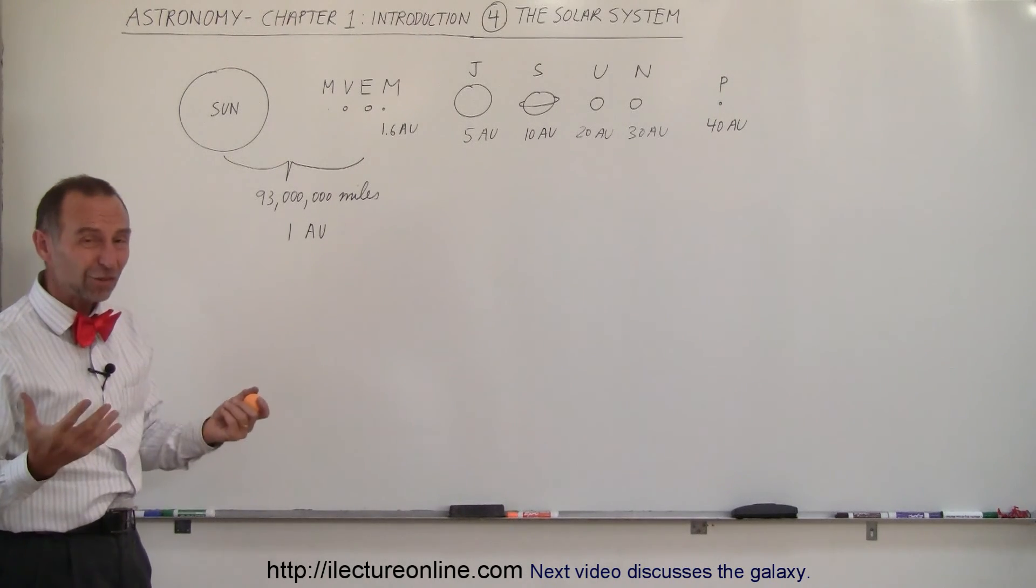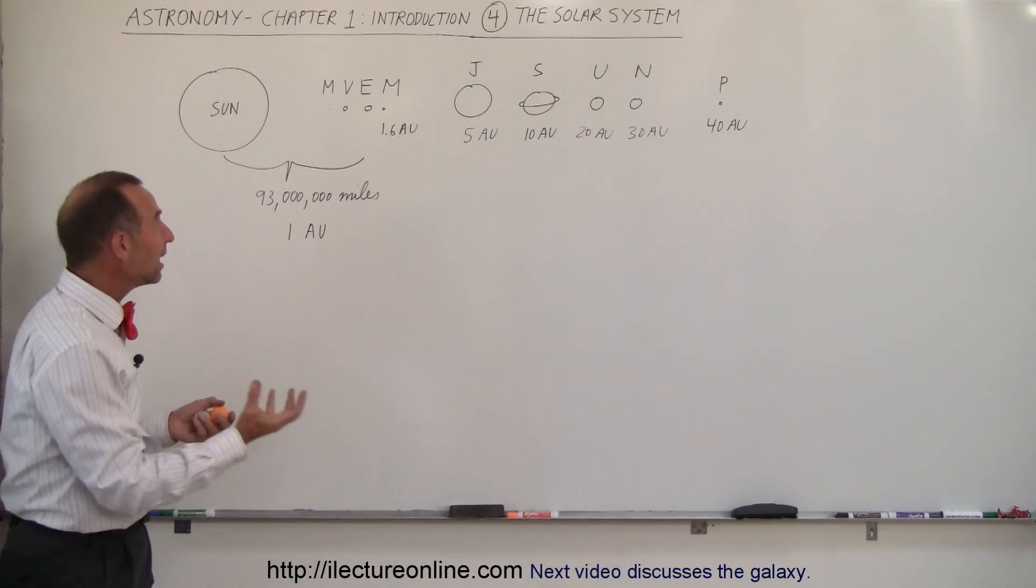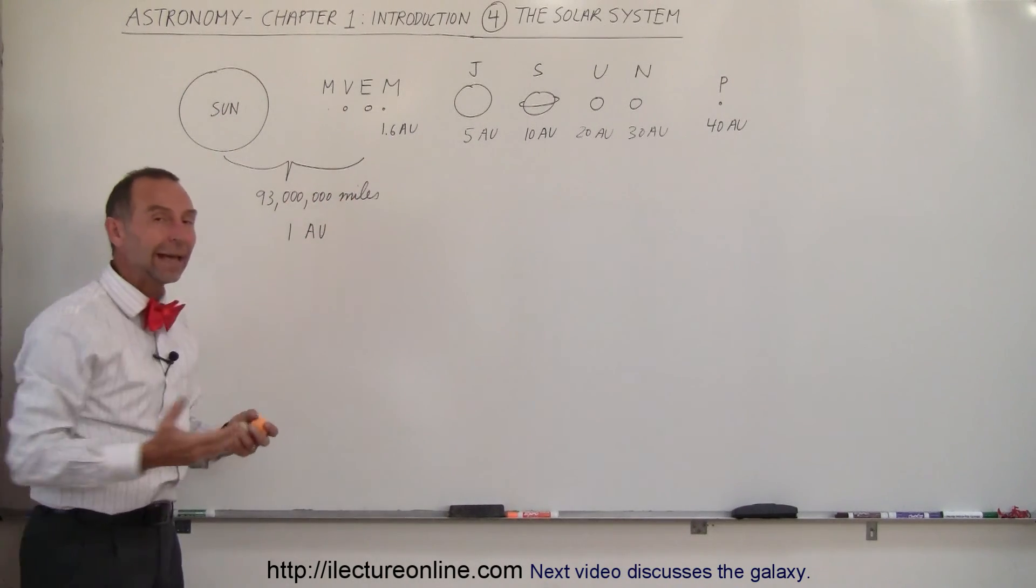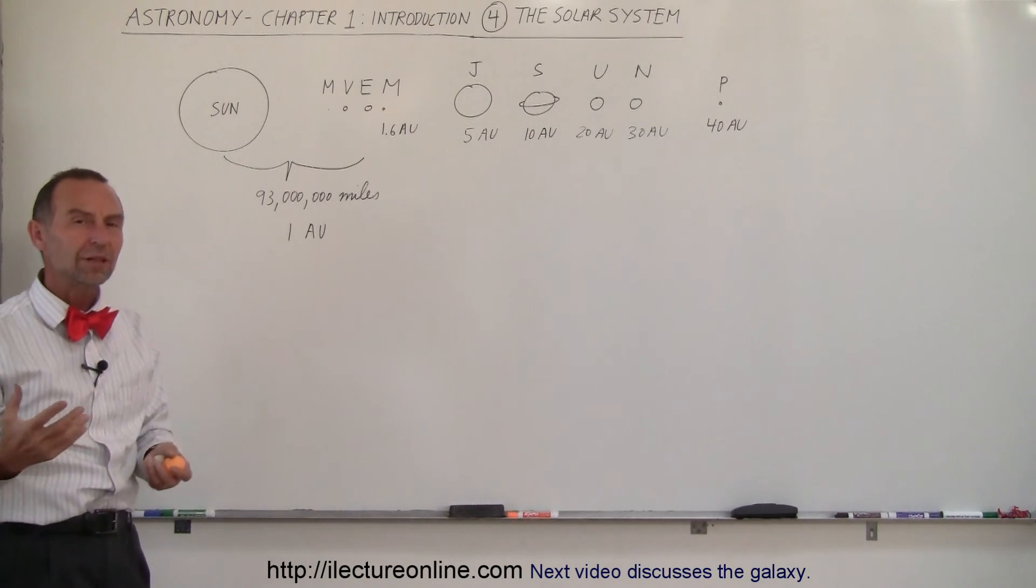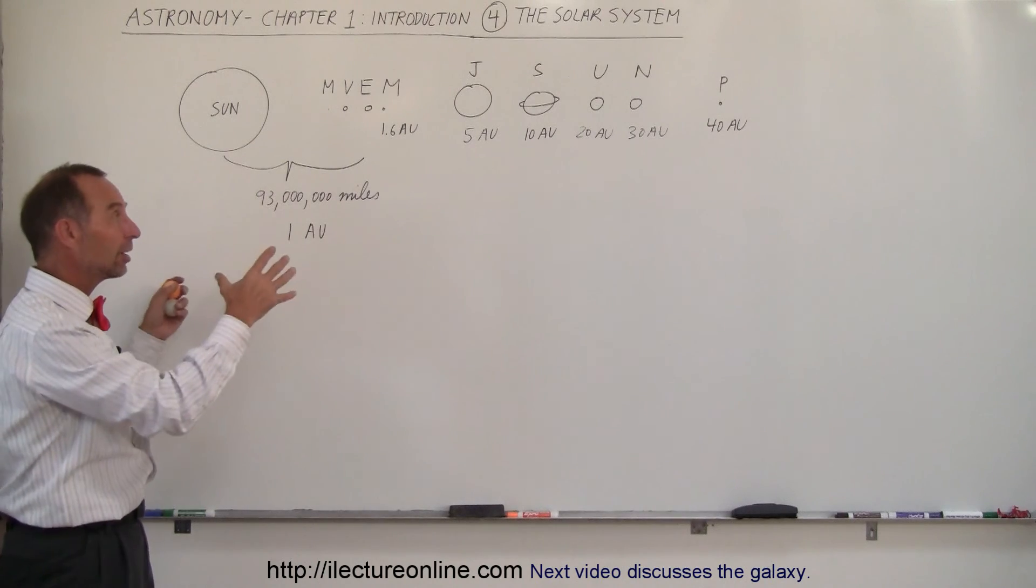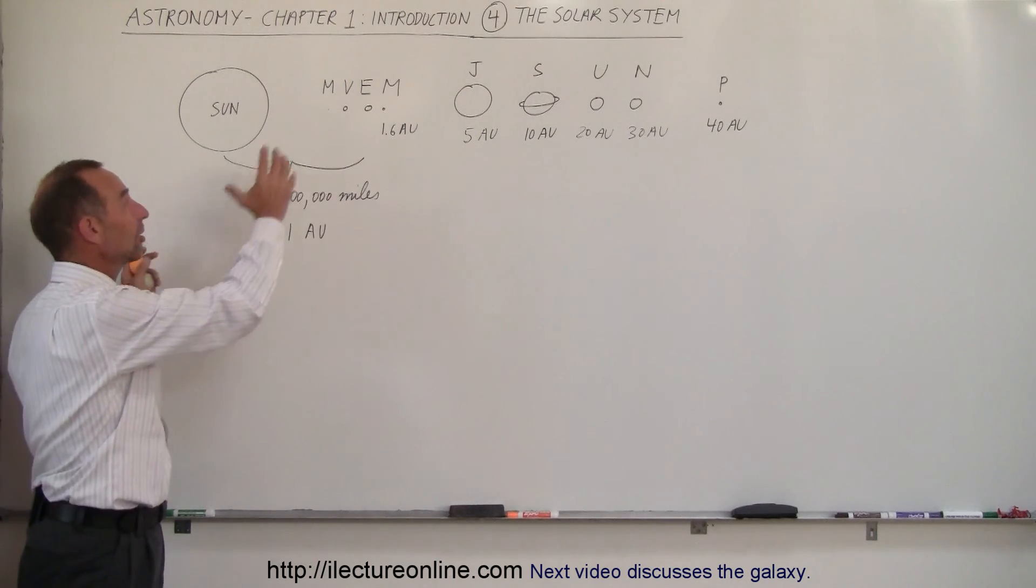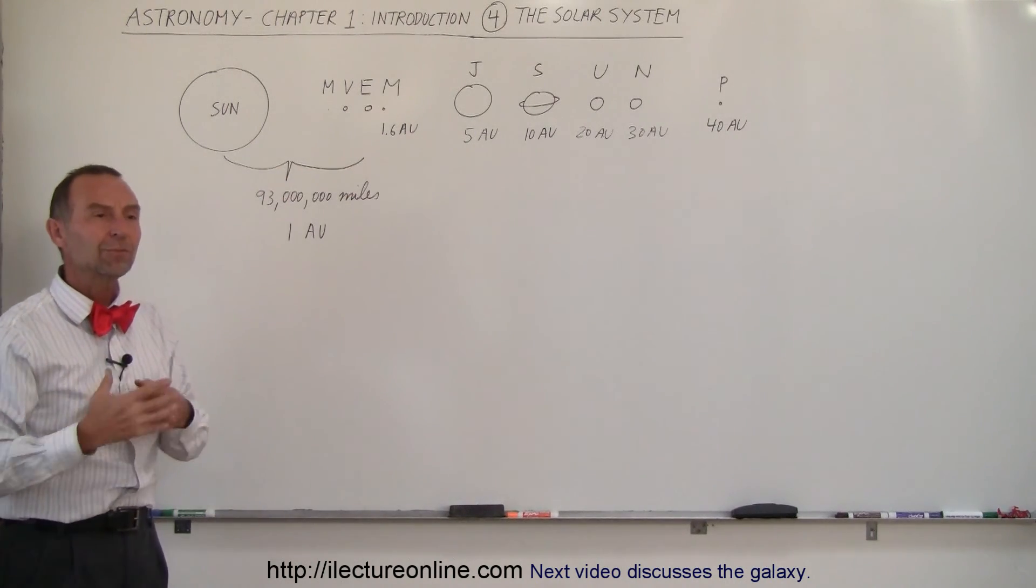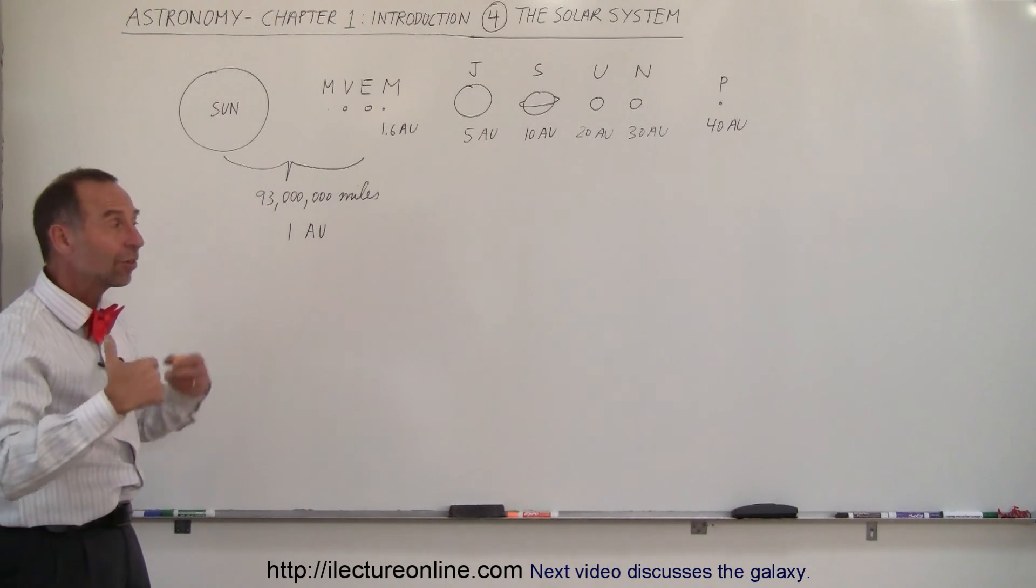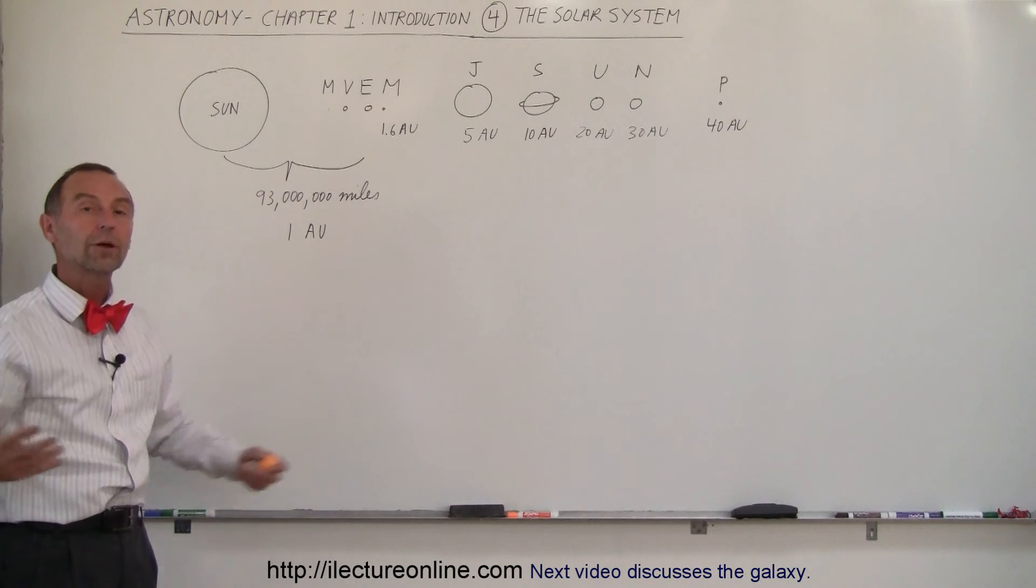And so, what is a solar system? A solar system is typically a star with planets going around it. And yes, we believe there's probably millions, hundreds of millions, if not billions of solar systems in our galaxy alone. Just like in our solar system, where we have a star and planets, we surmise that there must be hundreds of millions, if not billions of stars with planets making solar systems all throughout our own galaxy.